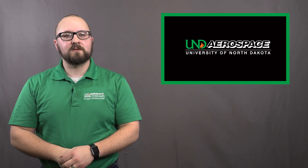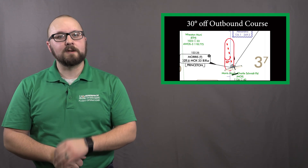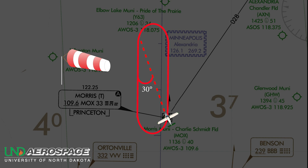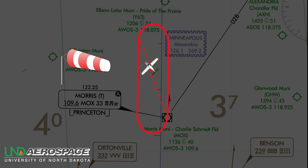The teardrop entry has you fly 30 degrees off of the outbound course. We know that we cannot just fly 30 degrees of heading off of the outbound course — remember, we must account for the wind. One way to do this is to use the wind diamond to track 30 degrees off of the outbound course. Your flight instructor may have another way to calculate your new outbound heading; there is more than one way to accomplish this task. Once you cross the fix, start your timer and turn to your new outbound heading. You will fly this heading for one minute before making a standard rate turn back to the inbound course.